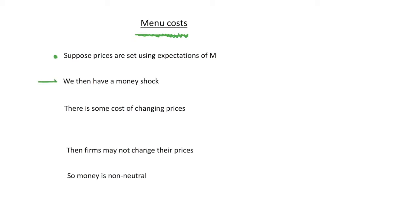Now suppose we have a money shock — something unexpected happens and the money supply is not at the level expected by firms. Prices have been set using expectations, but something different has occurred. There's also some cost of changing prices in order to respond to this unexpected money shock. This is what we call a menu cost — it could be the cost of reprinting catalogues, or the psychological cost for customers who don't like prices changing every visit. We call it a menu cost because you can think of it as the cost of reprinting a menu in a restaurant.